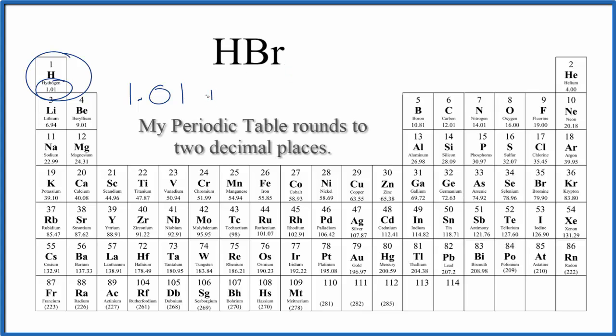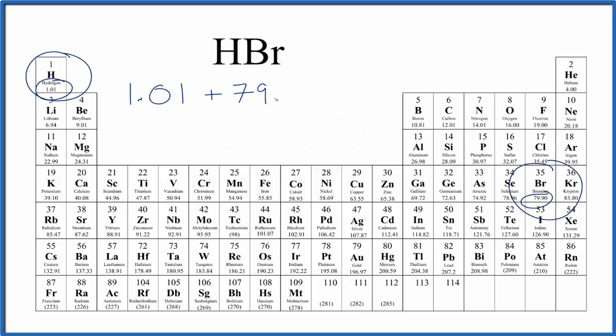We also have one bromine, so we'll add to the 1.01 for hydrogen. Bromine is 79.90, and again the units are grams per mole.